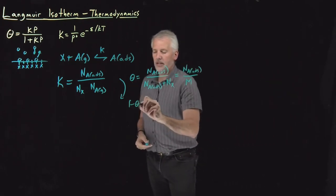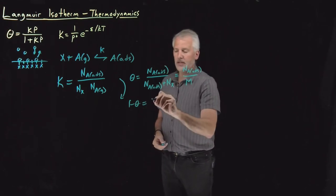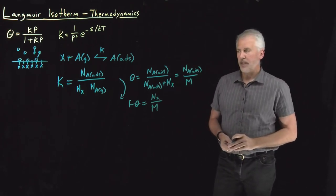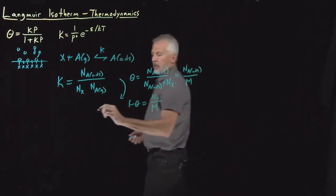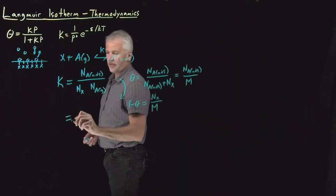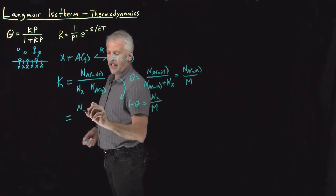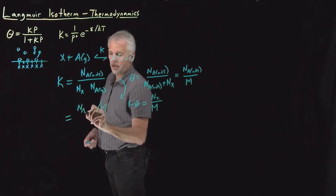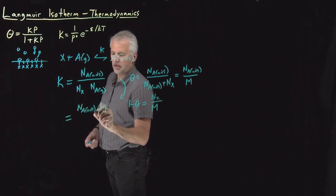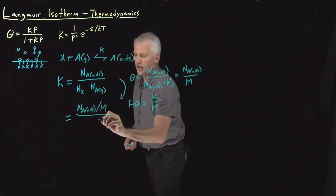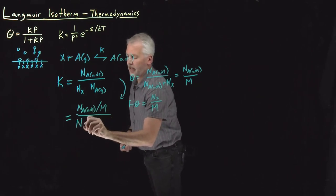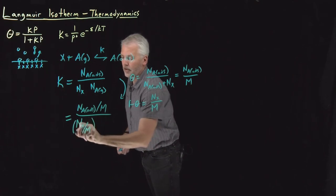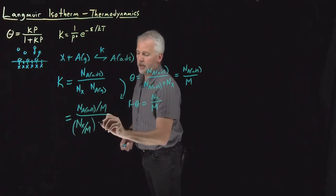1 minus theta would be the empty sites, the number of empty sites divided by the total number of places you can adsorb. So if I rewrite this equation, instead of thinking about it as n over these n's, if I divide on the top by m, so it's the number of adsorbed over m on the top, on the bottom I'll leave n_x, I'll divide that by m also, and I'll leave gas phase species alone.